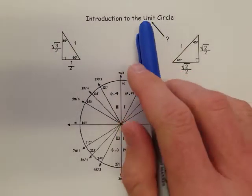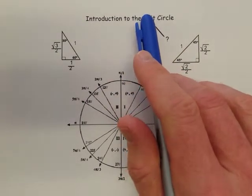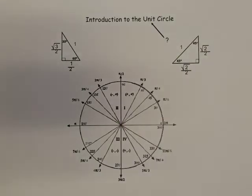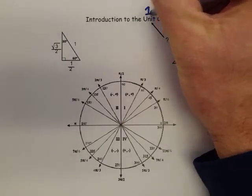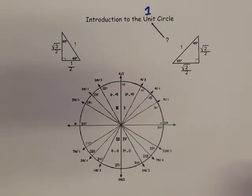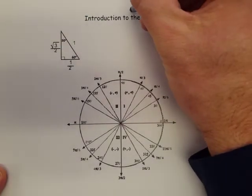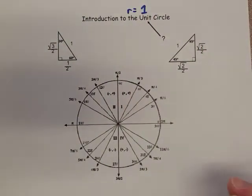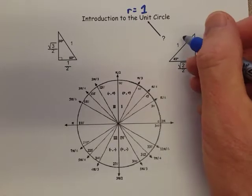In math, that word unit means one. And so when we say the unit circle, that means there's something to do with one. And the something is the radius. So we're looking at a radius or a hypotenuse that's always equal to one.